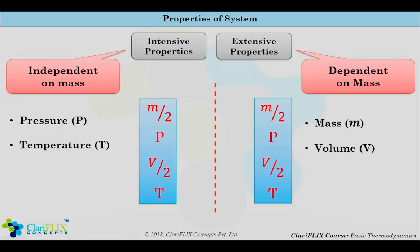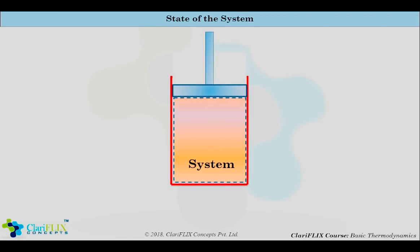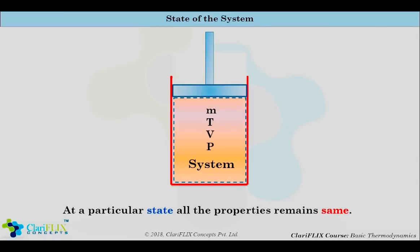Now let us talk about the state of the system. Consider a system which is not undergoing any change in property. At this point, every property can be measured and that can give complete information about the system. This completely well-defined condition of the system is called state. Here we are considering a piston-cylinder arrangement having mass m, temperature t, volume v and pressure p. At a particular state, all the properties remain the same, and if even one property is changing, then the state is different.